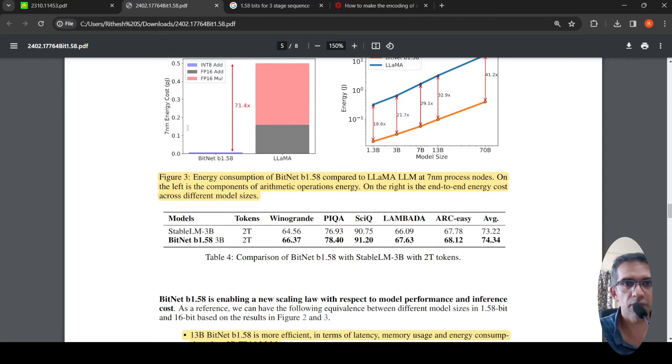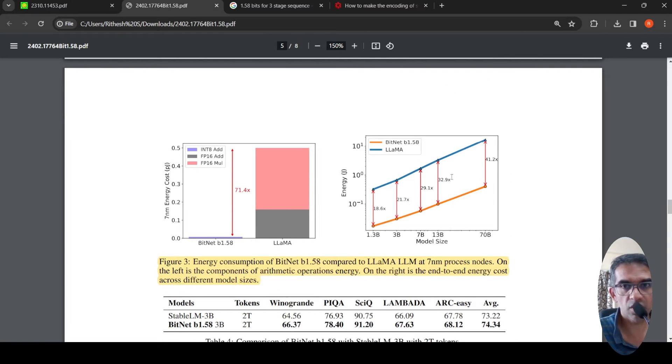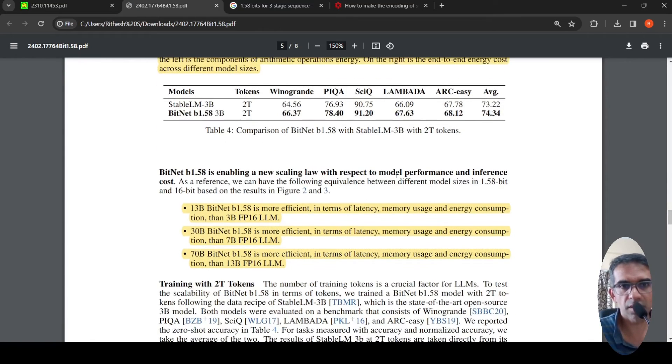Or this bigger model takes, compared to the one bit net, this takes this much higher amount of energy. On the right is end to end energy cost across different model sizes. So based on this, they come up with some nice scaling laws, which says a 13 bit BitNet 1.58 is more efficient in terms of latency, memory usage and energy consumption than a 3 billion parameter floating point 16 LLM.